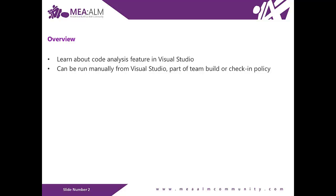In this lab you'll be introduced to code analysis, how to configure rule sets, and finally how to suppress specific rules at a project and source code level. Note that code analysis can be found in the Professional, Premium, and Ultimate editions of Visual Studio 2012. A subset of the most critical code analysis warnings are included in the Express edition for free. This applies to C++, C#, and Visual Basic code analysis.